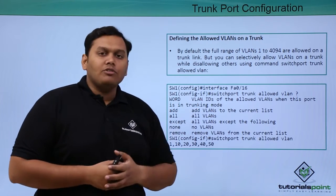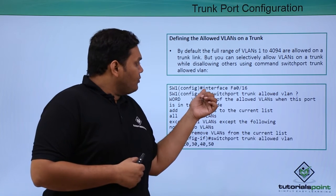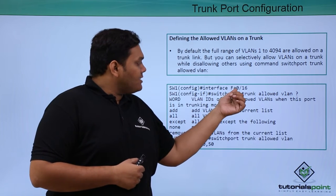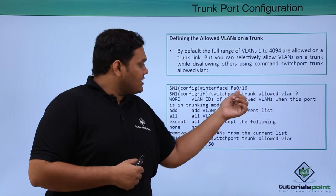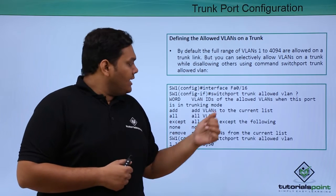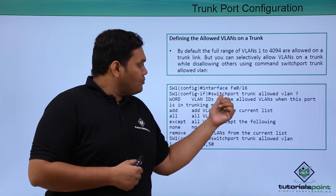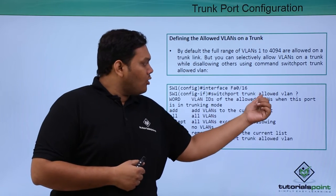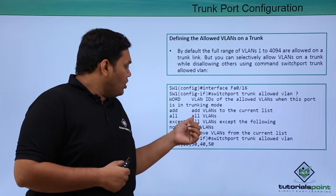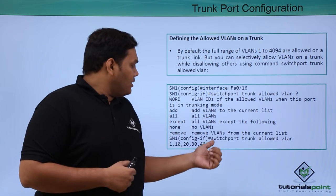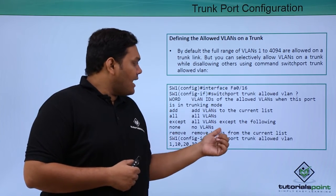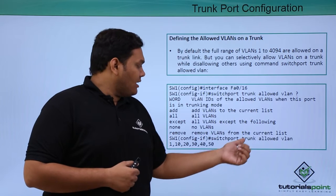When you enter into the configuration terminal mode and enter interface FA0/16, it will take you into the interface mode. Here, if you enter switchport trunk allowed VLAN, it will show the list of current VLANs except the following VLANs.